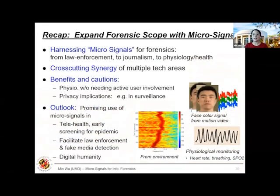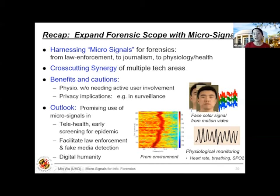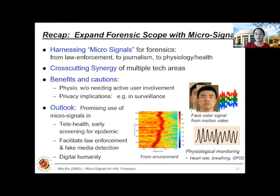This ride through expanding forensic scopes in micro-signals — from law enforcement to journalism to physio and health monitoring — shows course synergies among multiple technical areas with shared problems tackled from our background. I look forward to interactions with applied math, statistical, and imaging colleagues to find broader and more general tools. There are both benefits and cautions: I mentioned briefly the privacy issues — sensing someone's heart without their knowledge — but we see promising use in public health, especially with COVID, where we have ongoing work estimating blood oxygen levels.